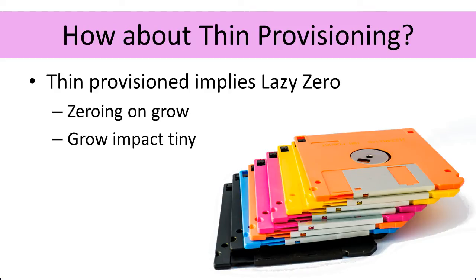How about thin provisioning? How does thin provisioning play with the performance impacts of eager versus lazy zeroing? The fundamental thing is that thin provisioned disks have to be lazy zeroed. By definition you can't zero a thin provisioned disk because that involves writing to every block, and that would make it no longer thin provisioned — it would inflate it out to maximum size. So the question is: is thin provisioning going to give me a performance problem compared to a lazy zero disk? The amount of disk access required to make the thin provisioned VMDK file larger is very small compared to the amount of disk activity required to write all the zeros through that disk.